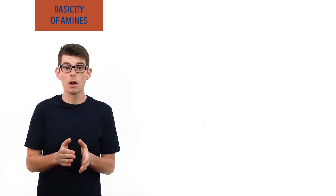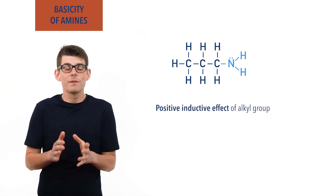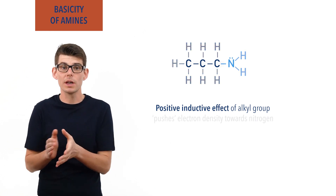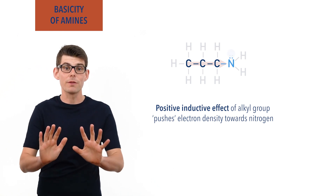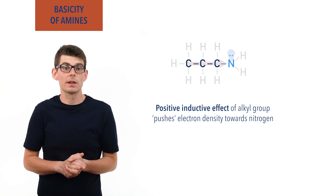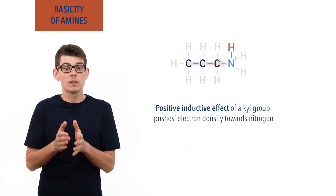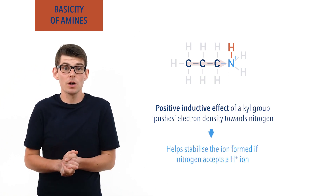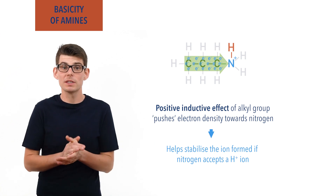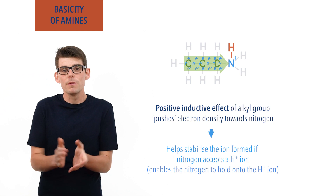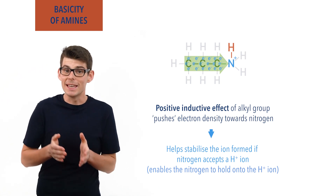In aliphatic amines, the alkyl group or groups bonded to the nitrogen give what is called a positive inductive effect — they are able to push electron density towards the nitrogen. This increases the electron density around the nitrogen atom, almost pushing the lone pair of electrons further away from the atom and making them more available for a H+ ion to bond with. If the nitrogen accepts a H+ ion, this positive inductive effect also helps stabilize the positive charge, as electrons are negatively charged and if pushed towards a positive charge, make it more stable. This stabilization helps stop the ion from losing the H+ ion again. This all makes aliphatic amines relatively strong bases and stronger than ammonia, because in ammonia there are no alkyl chains giving a positive inductive effect.